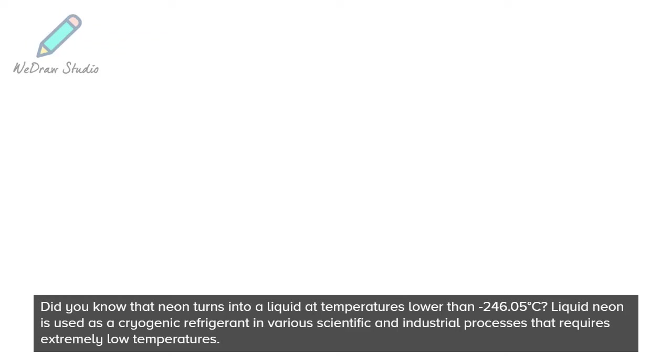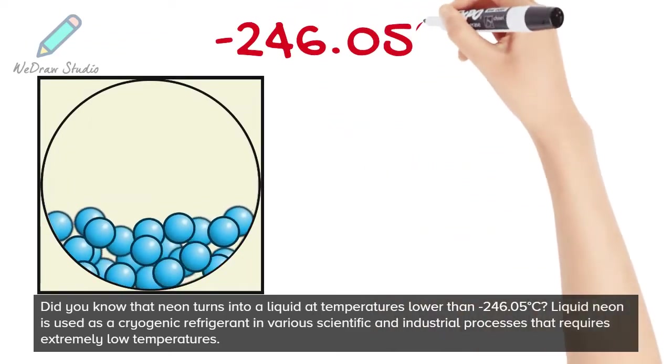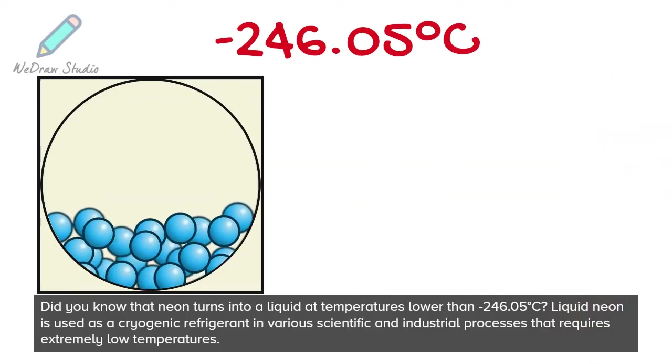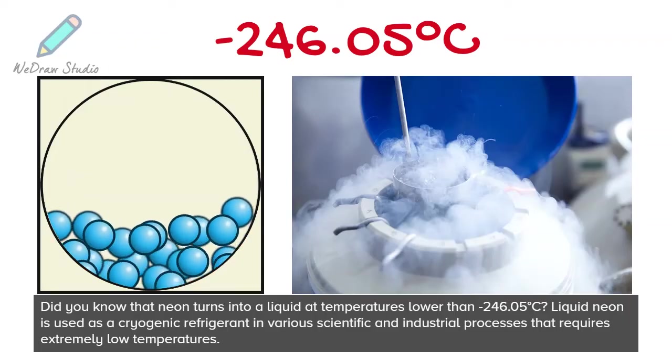Did you know that neon turns into a liquid at temperatures lower than minus 246.05 degrees Celsius? Liquid neon is used as a cryogenic refrigerant in various scientific and industrial processes that require extremely low temperatures.